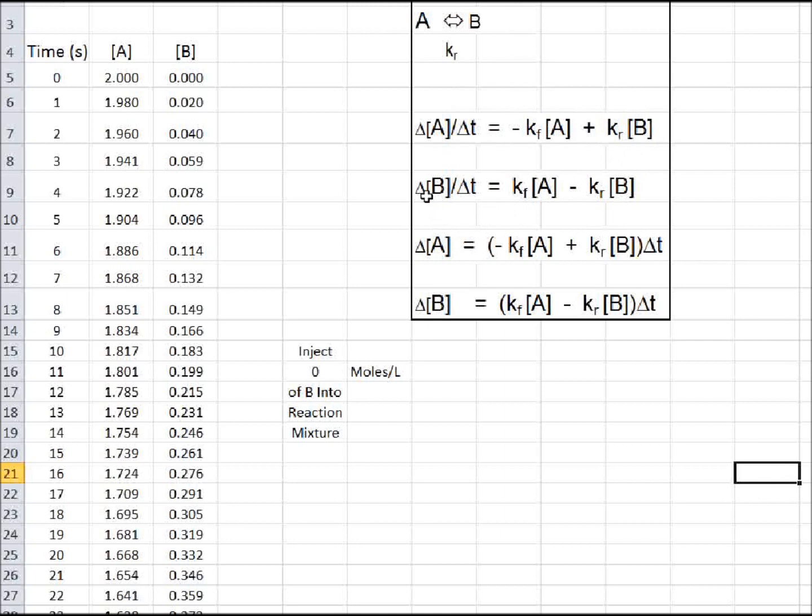In a similar way, the change in the concentration of B per unit time will equal Kf times the concentration of A minus Kr times the concentration of B. These two terms are equal but opposite in sign.